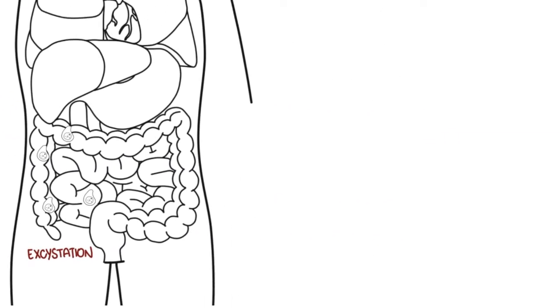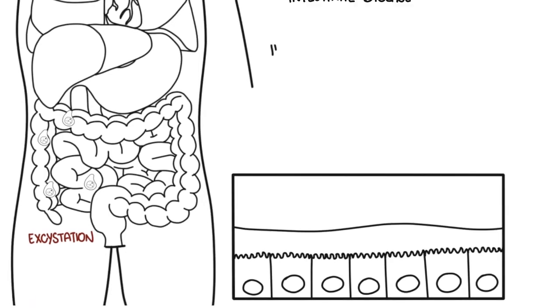Trophozoites can also invade the intestinal mucosa. This is called intestinal disease, causing conditions such as colitis, inflammation of the bowel. The trophozoites here damage the mucosal layer of the intestine through several mechanisms.